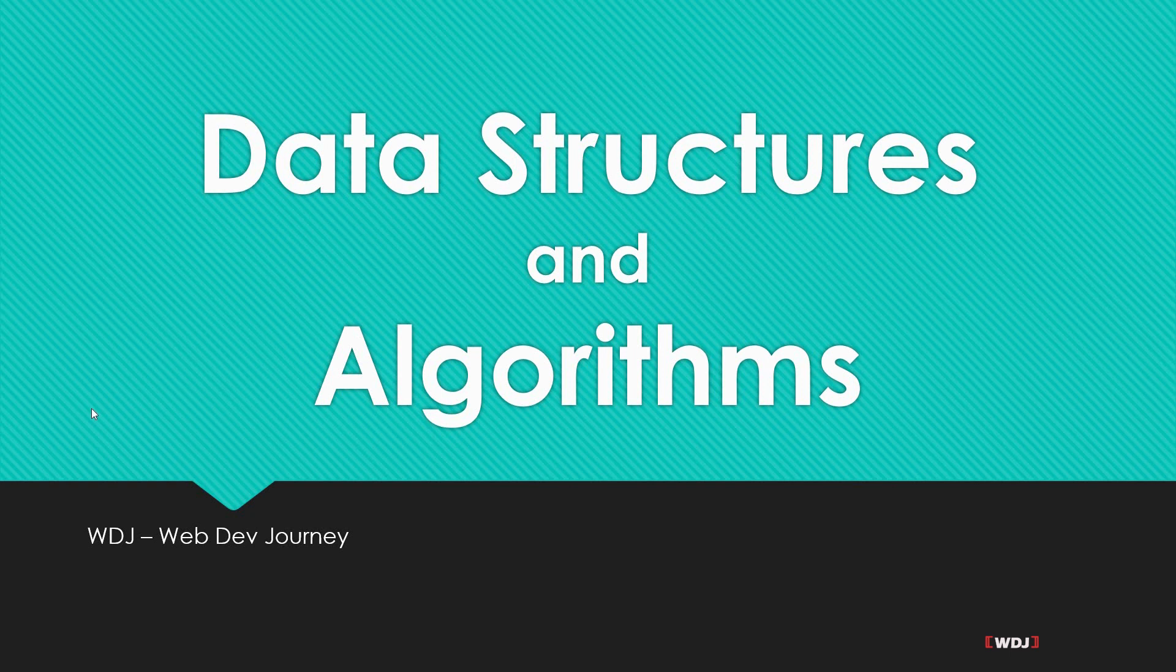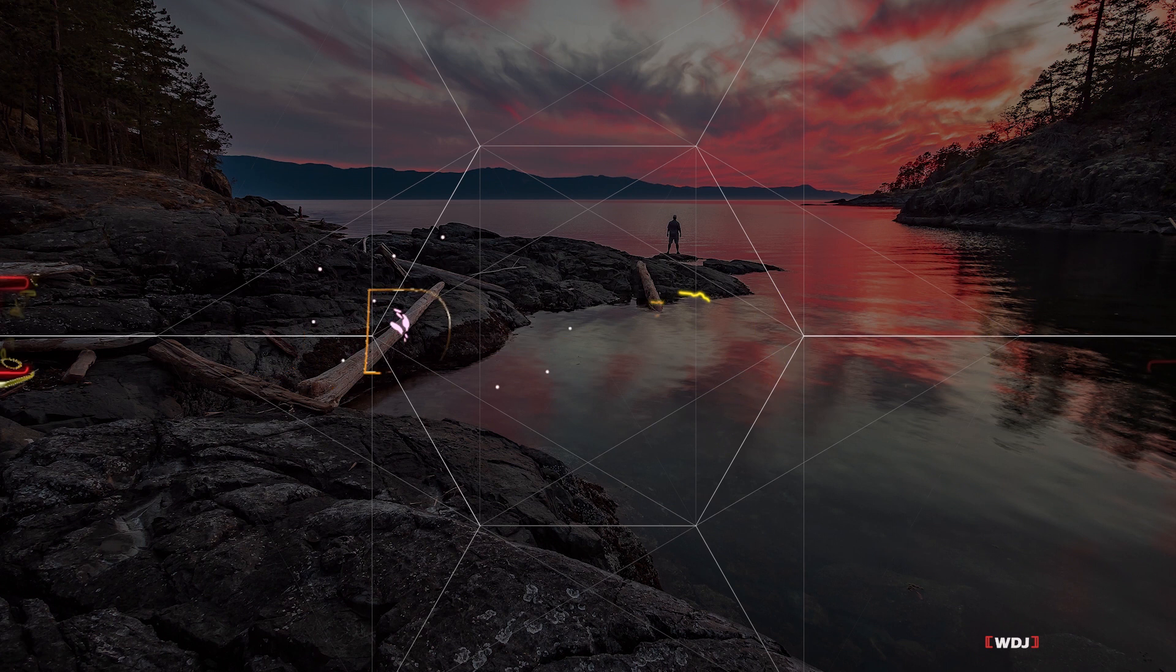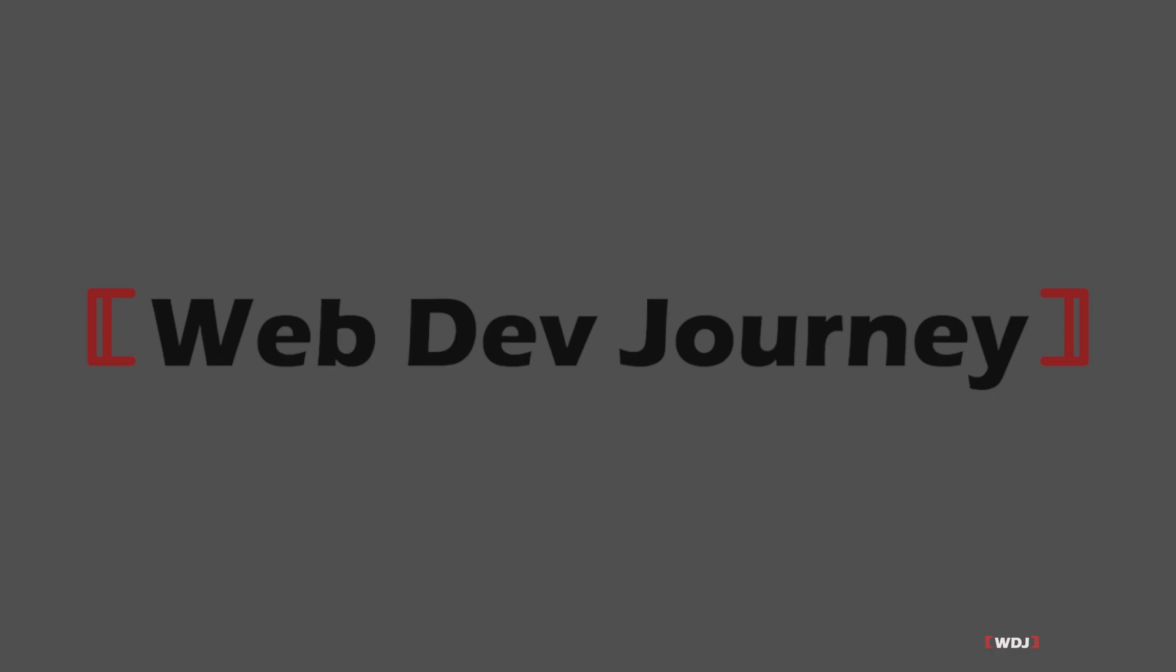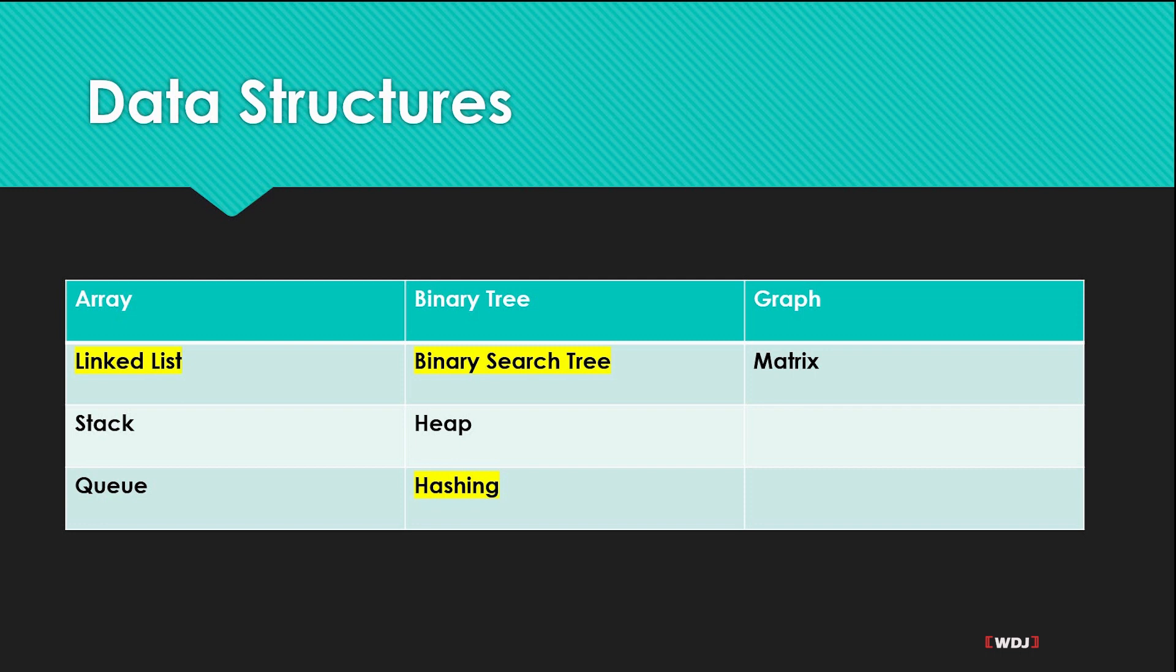What's going on guys, today we're gonna be starting a brand new series on data structures and algorithms. We're gonna start off with data structures, the definition. Here's a one-liner simplified version of that: different ways of sorting data on your computer. We've all used data structures before - we use arrays, graphs, and hashing.